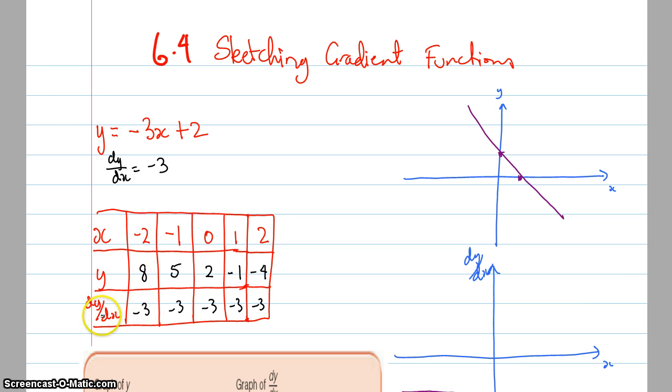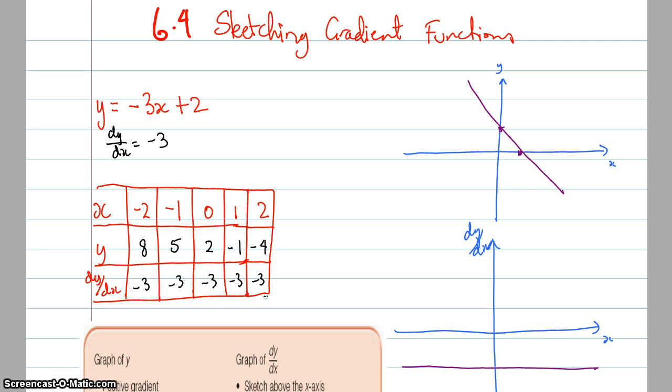But the gradient at these points, the gradient actually is always negative 3. It doesn't change at any point along this graph. It is always negative 3. So it doesn't matter what x value it is, it's always a constant gradient. And so I end up getting this line here, y equals negative 3.